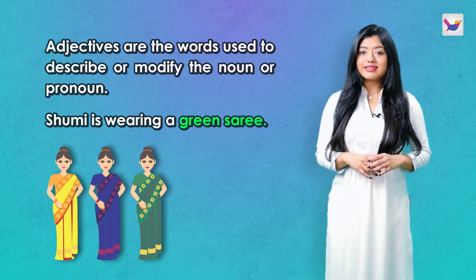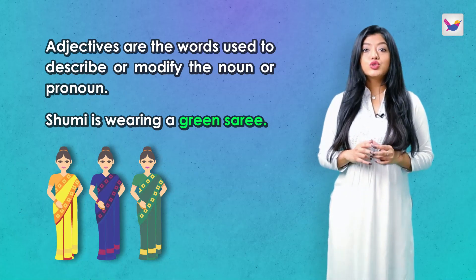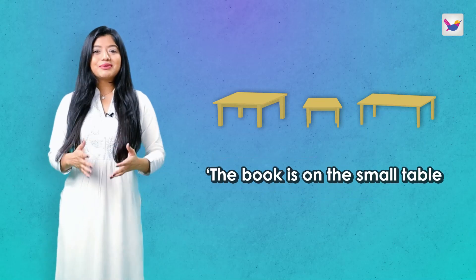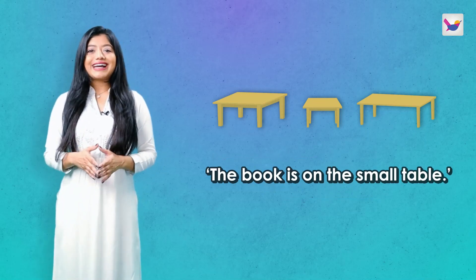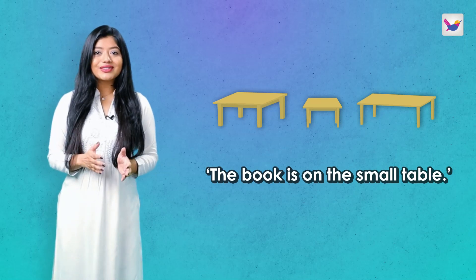Shumi is wearing a green sari. This is the green word that we are talking about. Shumi is a very good friend. Small table — so it will be very easy to go to this one. This is 'small' — adjective.